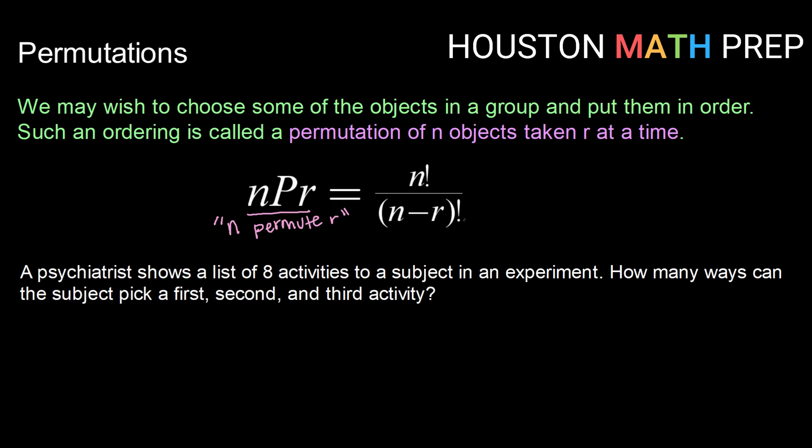So let's look at an example of that. Let's say that a psychiatrist shows a list of eight activities to a subject in an experiment. How many ways can the subject pick a first, second, and third activity? So here, we have eight activities to choose from. Since we're putting them in first, second, third order, we're going to permute groups of three.